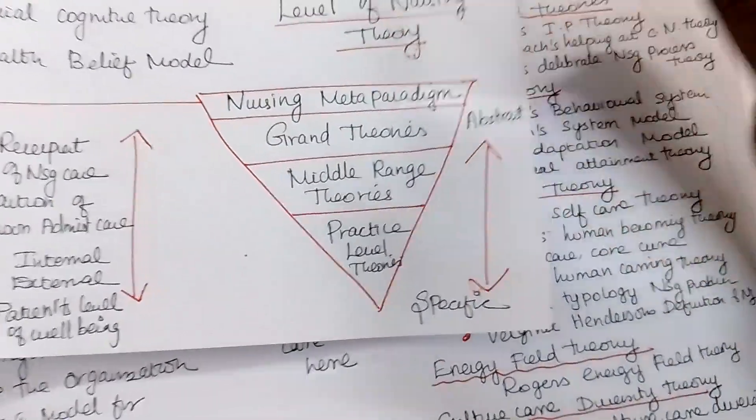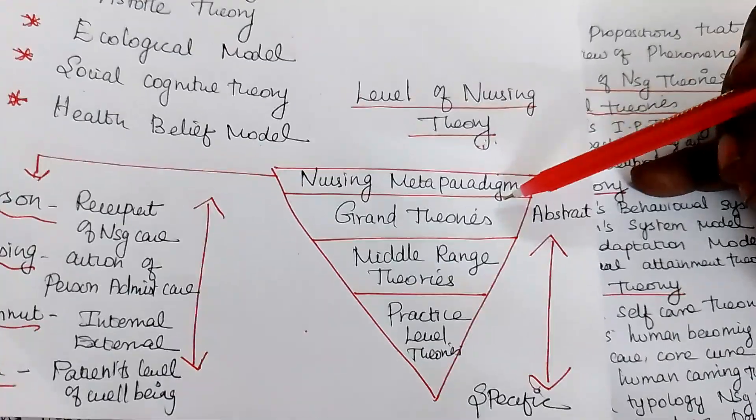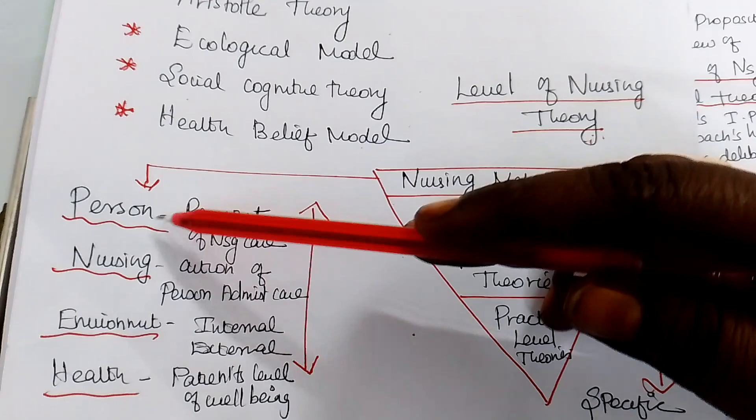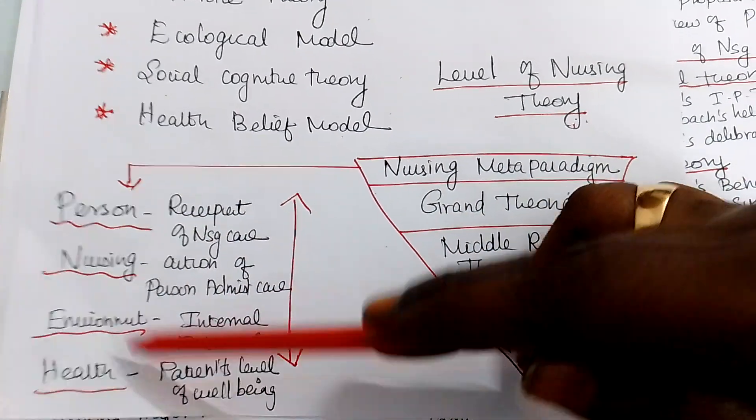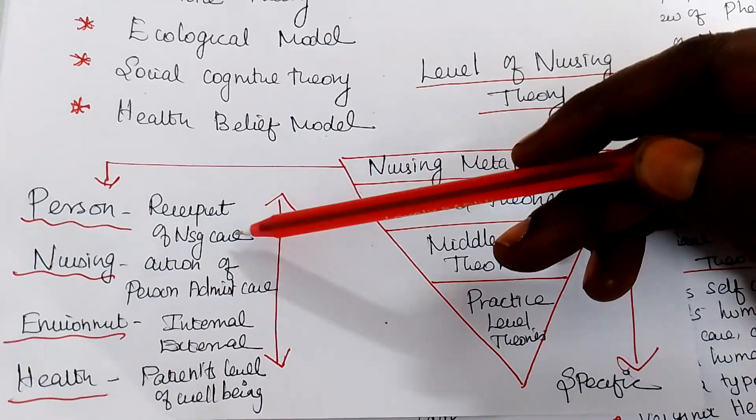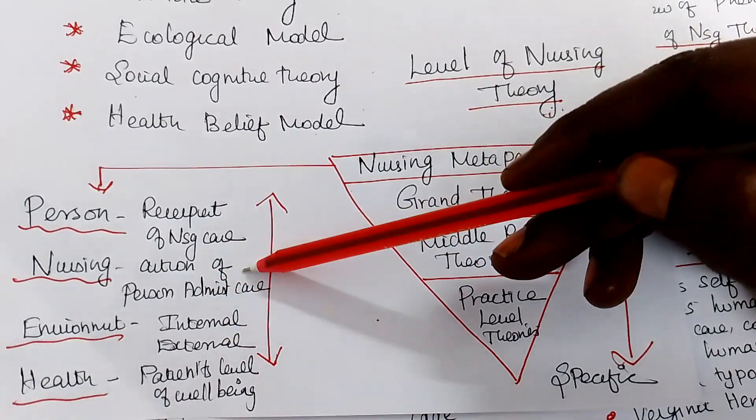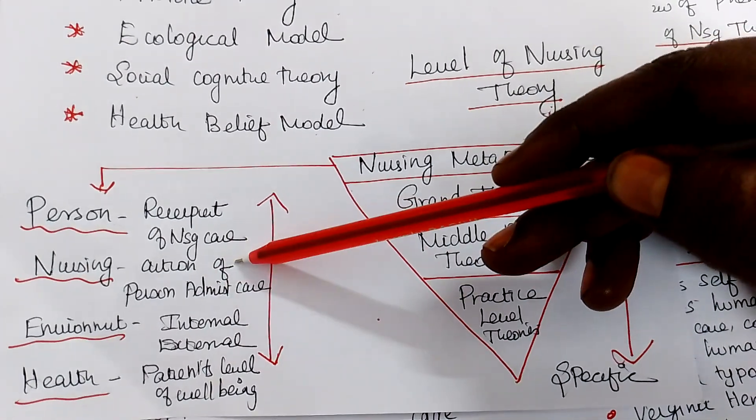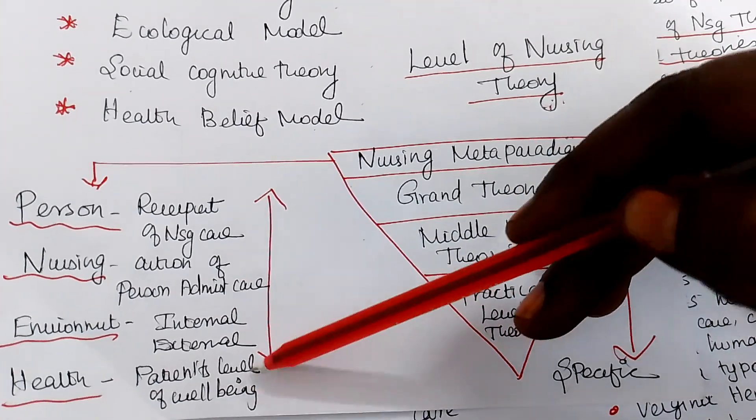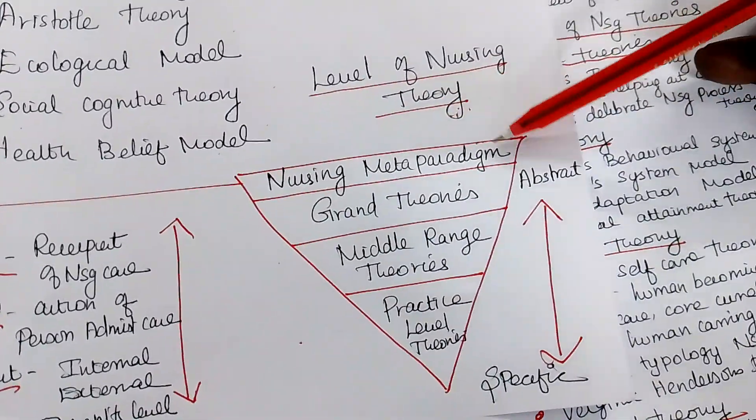In nursing, we have a nursing meta-paradigm. Meta-paradigm means what? Meta-paradigm. Who is meta-paradigm? That is for meta means for person, nursing, environment and health. Person is the recipient. Who is the recipient of nursing care? Person or family or community. Nursing is the action. The person is administering care to the community or the individual. Environment, internal and external environment. And the health, the person's level of well-being or the community's level of being. So what is meta-paradigms?